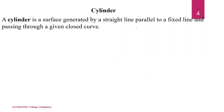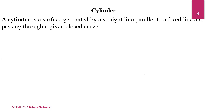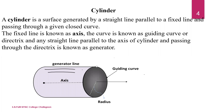Let us see what a cylinder is. A cylinder is a surface generated by a straight line, parallel to a fixed line and passing through a given closed curve. These are the generators, and all the generators are parallel to the fixed line. This fixed line is called the axis of the cylinder. This curve is known as the guiding curve.